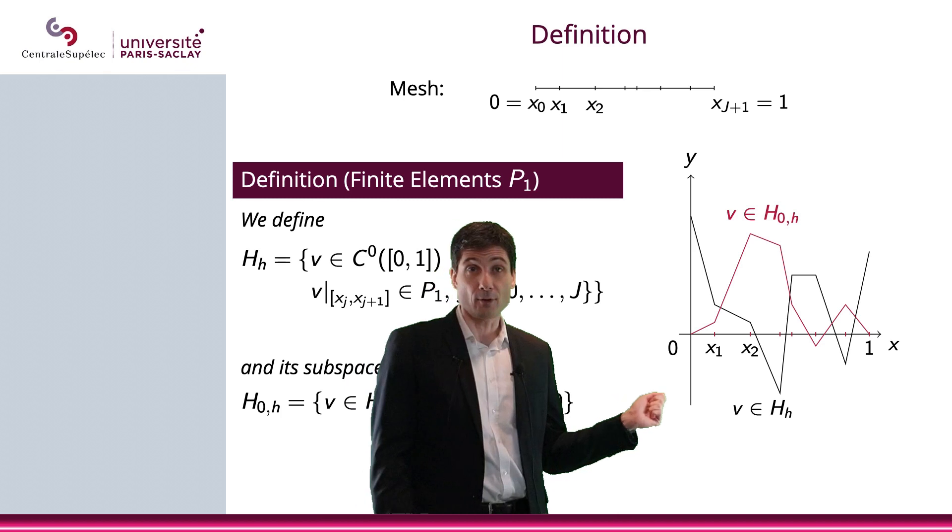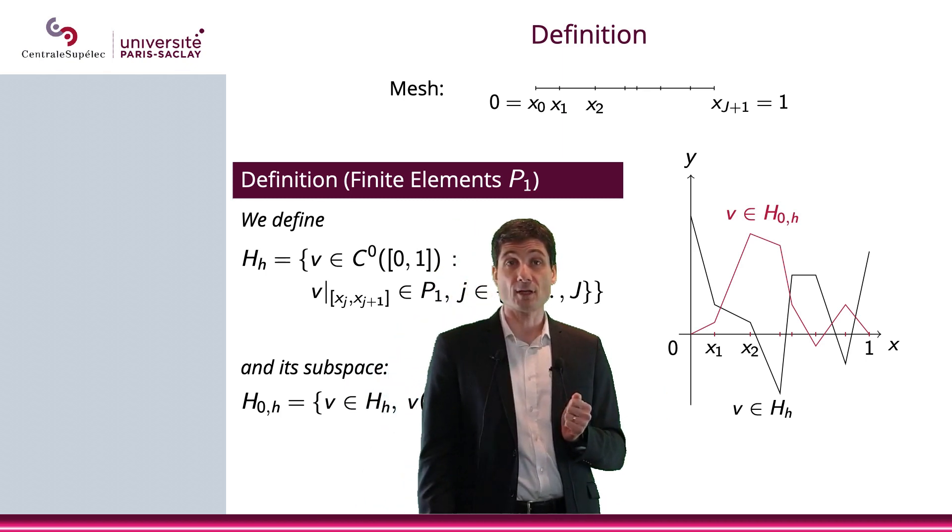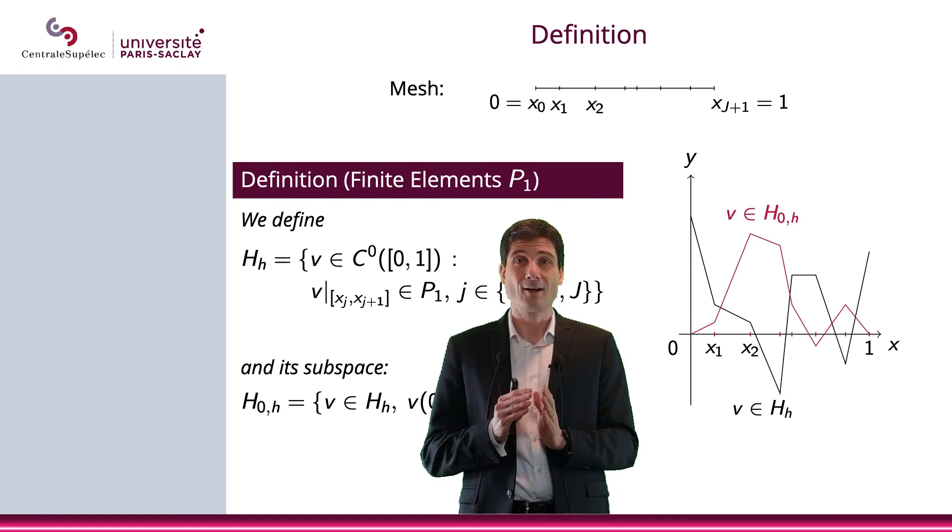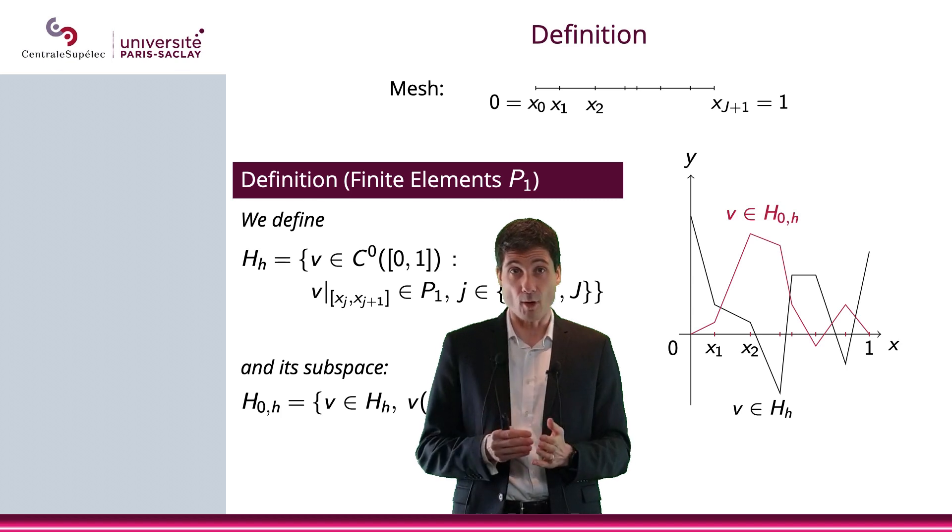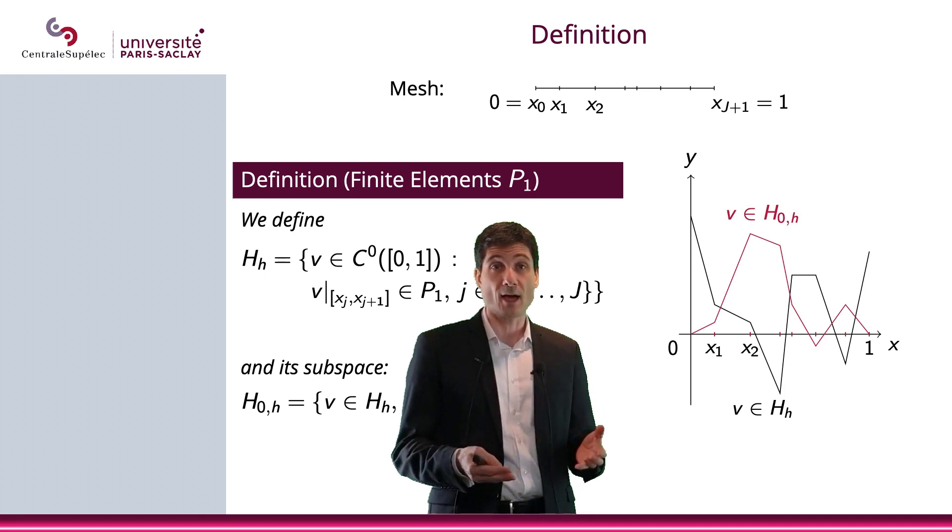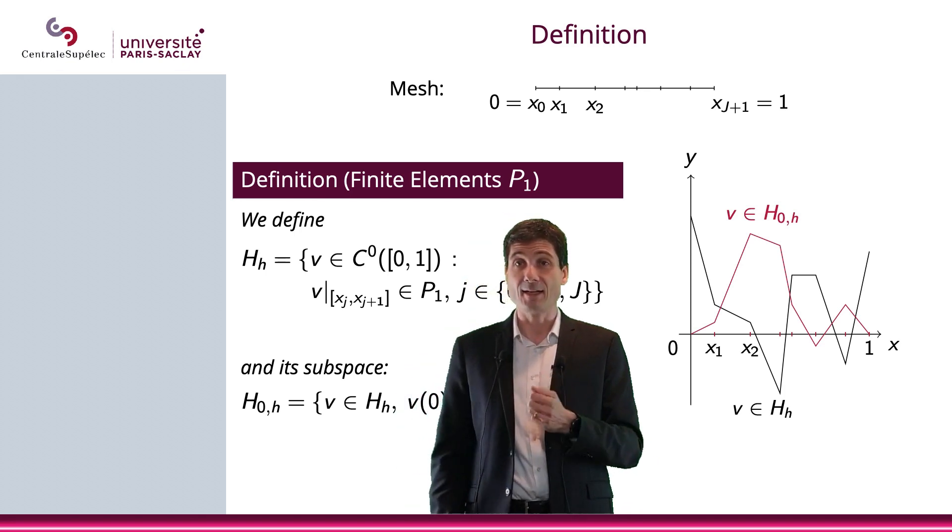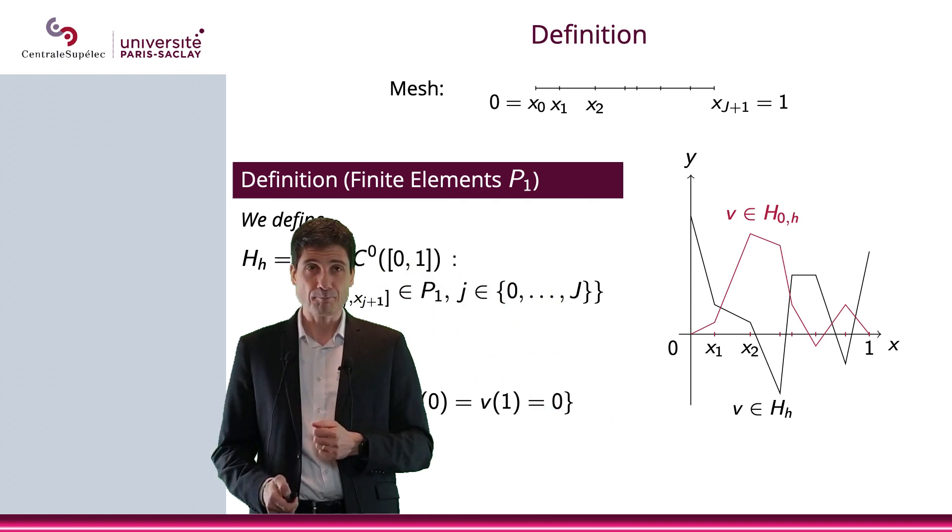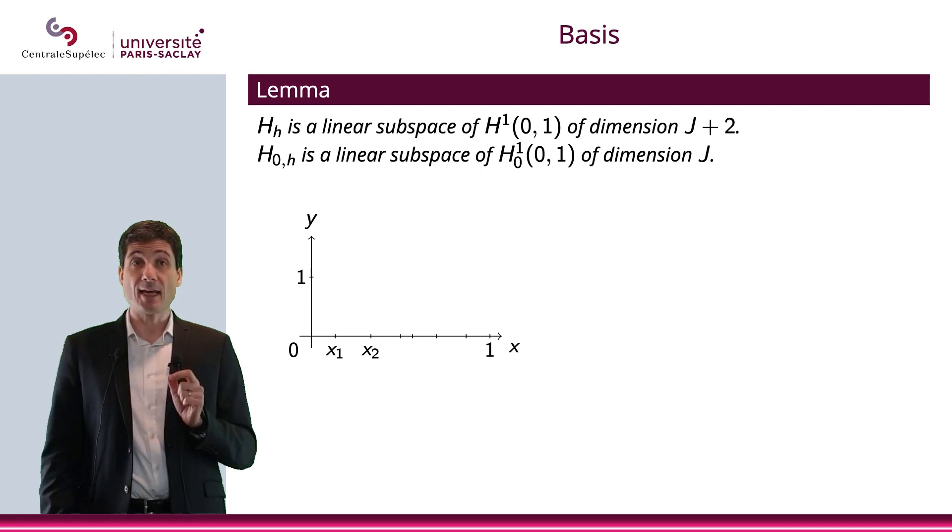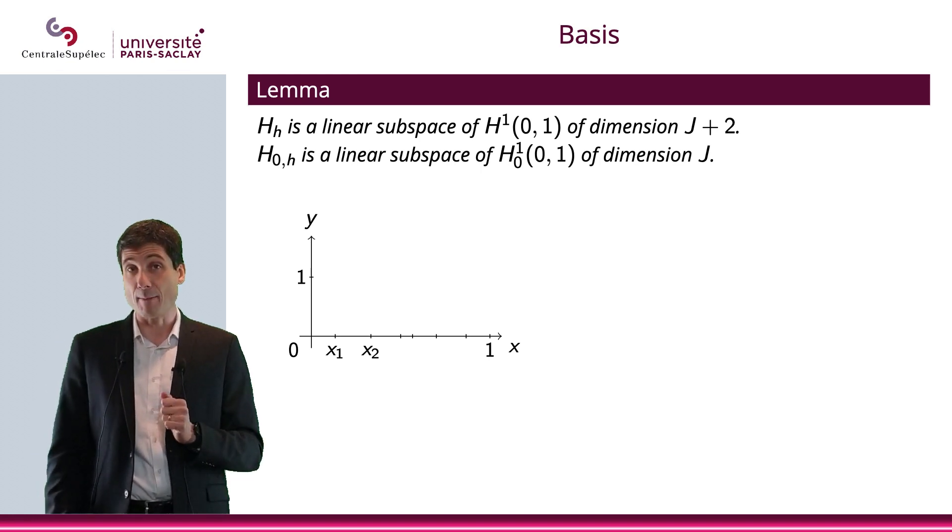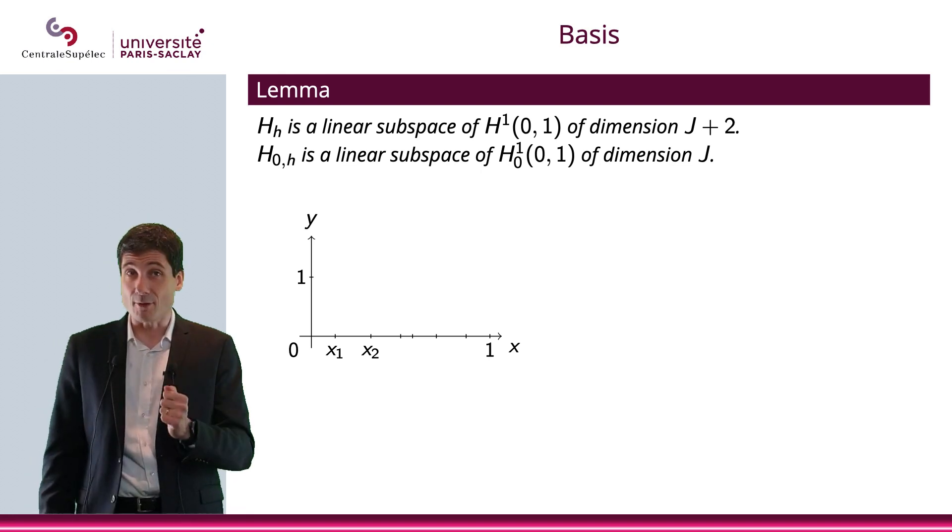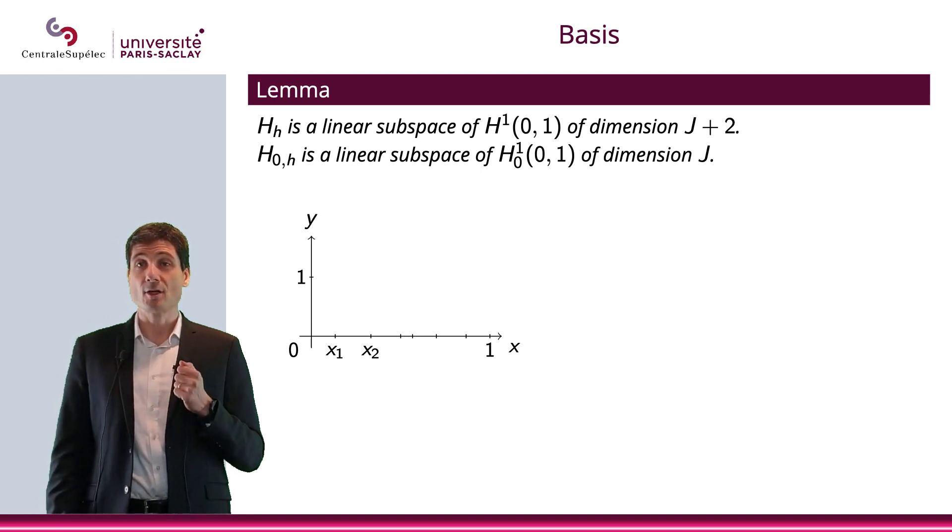So let me give you an example. Here you have a function in H_h. As you can see, I'm in between two points of the mesh, and that basically is a polynomial of degree 1. And if you want to be in H_{0,h}, then on top of this you have to be equal to 0 at 0 and at 1. Now, let me give a lemma here: H_h is a linear subspace of H^1(0,1) of dimension J+2, and H_{0,h} is a linear subspace of H^1_0(0,1) of dimension J.